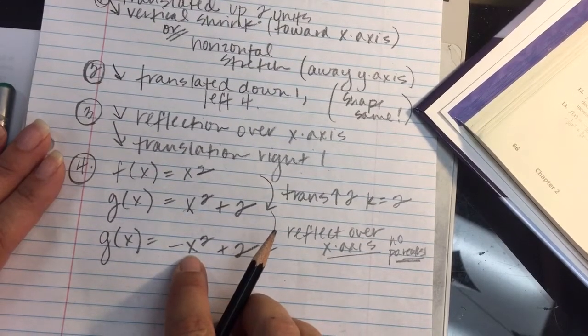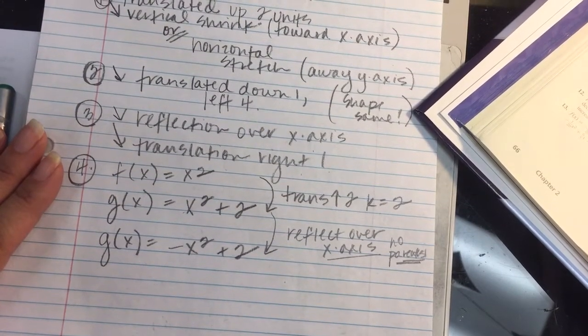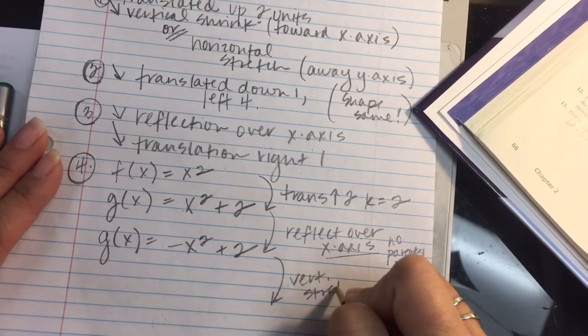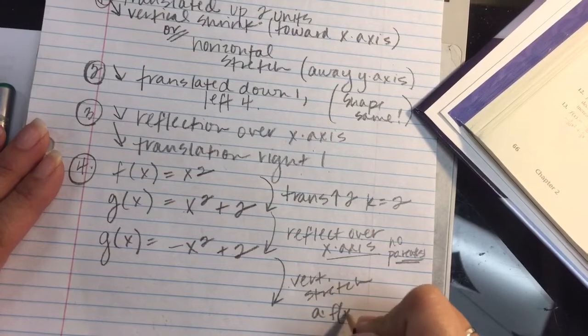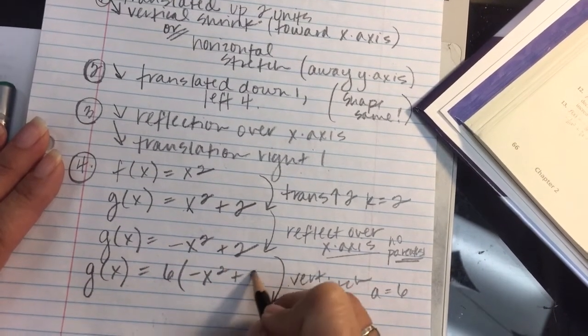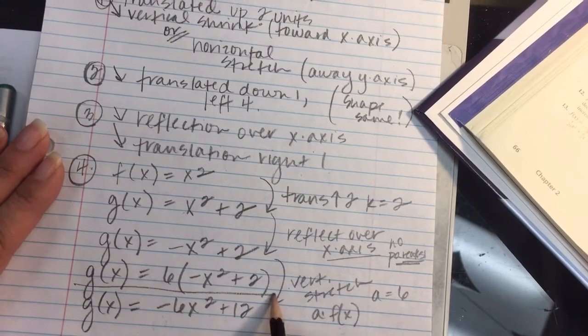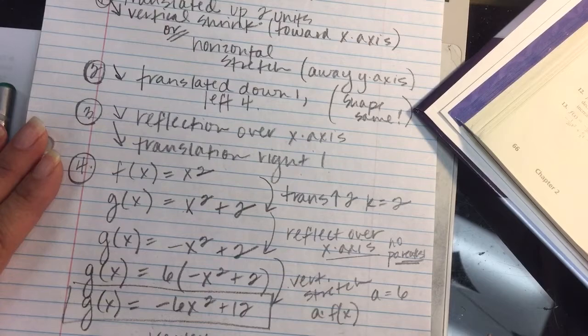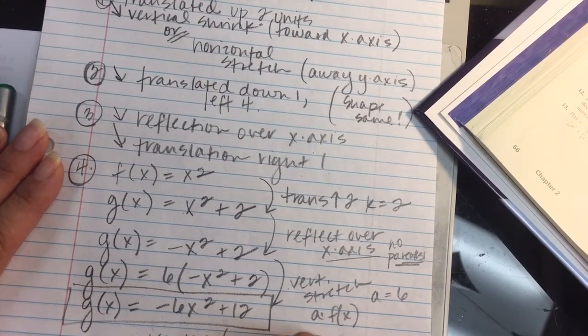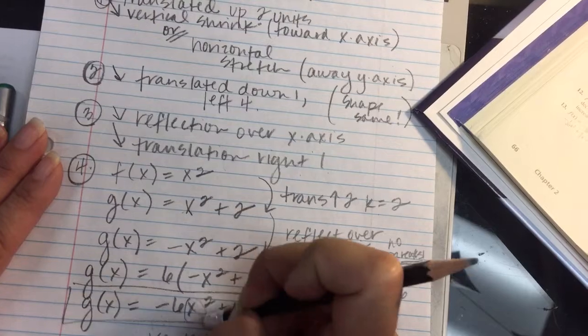And then the last part of this one wants a vertical stretch by a factor of six. Now a vertical stretch by a factor of six has to do with a being multiplied by the entire function. A vertical stretch of a factor of six, vertical stretch a times the whole function. And in this case, my factor is six. So g of x is going to be six times the entire function, negative x squared plus two. So that'll result in negative six x squared plus 12. G of x is negative six x squared plus 12. They also want us to have the vertex on this. The vertex is going to be sitting at zero comma 12. There's no value inside parentheses with x. I could assume it was plus zero. So the vertex is zero comma 12.